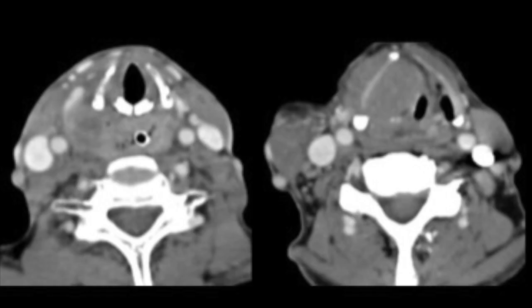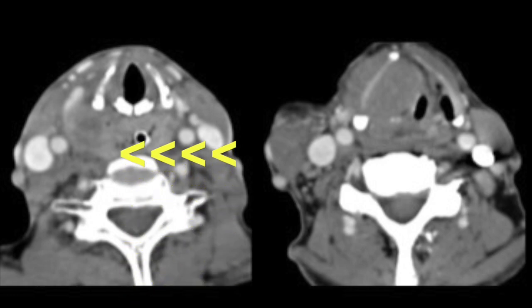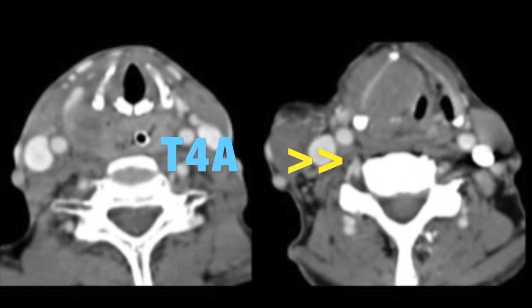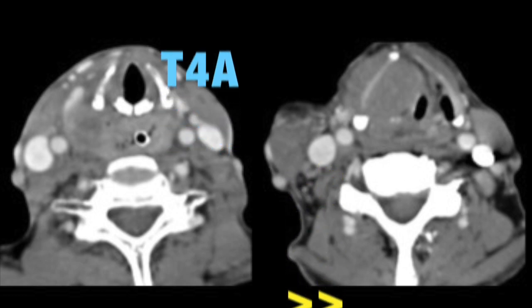In the next figure, there is involvement of the post-cricoid region and an extralaryngeal component — this is T3 disease. In the following figure, there is a white line of the cartilage with large-volume glottic disease, invasion of the pre-epiglottic space, and an extralaryngeal component with less than 180-degree abutment of the carotid artery. This is T4A disease.